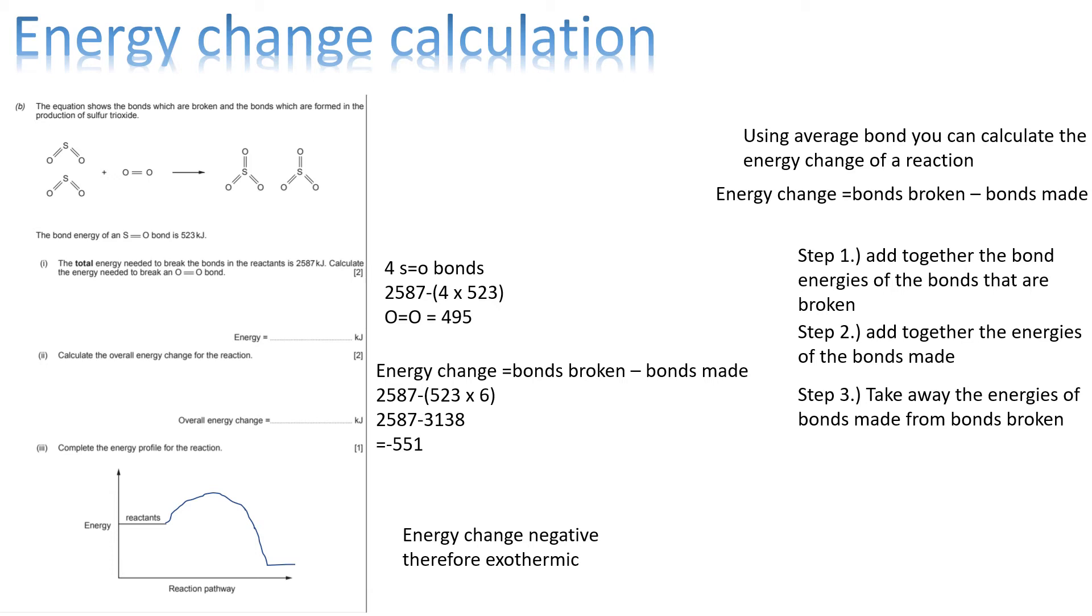Step 2, add together the bond energies of the bonds that are made. Step 3, we're just going to plug the numbers into the equation. So, energy change equals bonds broken minus bonds made. So, we know the bonds broken. That's 2,587 kilojoules. We've got to calculate the bonds made.